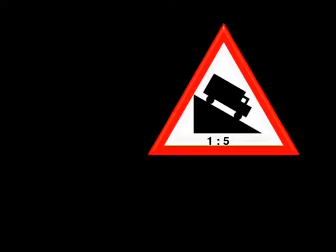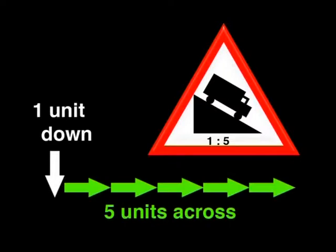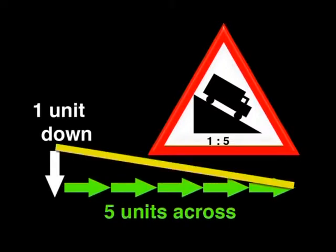That sign tells us how steep the road is. Really? Then how steep is it? Well let's have a look. The sign gave a ratio of one to five. It means that for every one meter we go down, we go five meters across. I just hope that truck had good brakes.